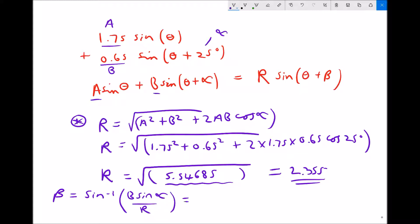So if we input our values then we have sin⁻¹ of b, which is 0.65, sine of α which is sin 25°—and once again a reminder that we need our calculator in degrees mode—divided by our value of R which we have here as 2.355, but what I'm going to do is I'm going to use my full calculator answer there to eliminate any rounding errors.